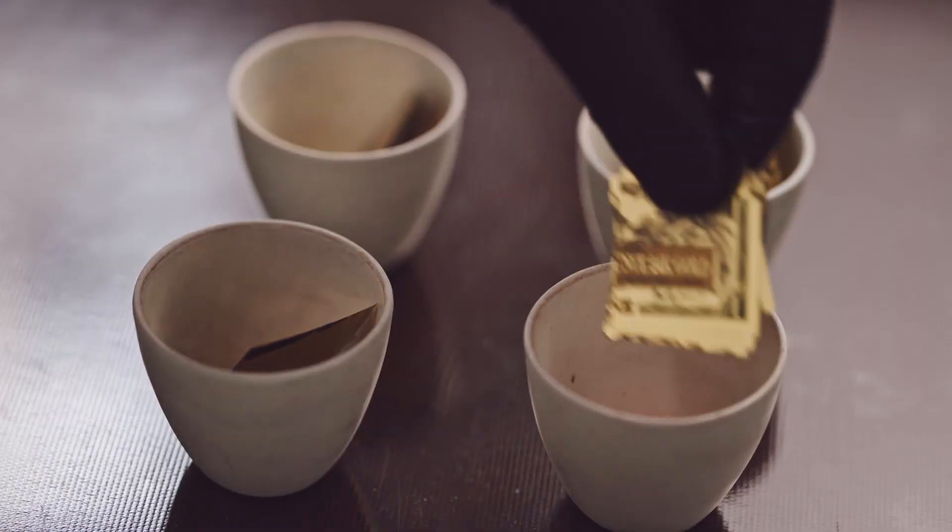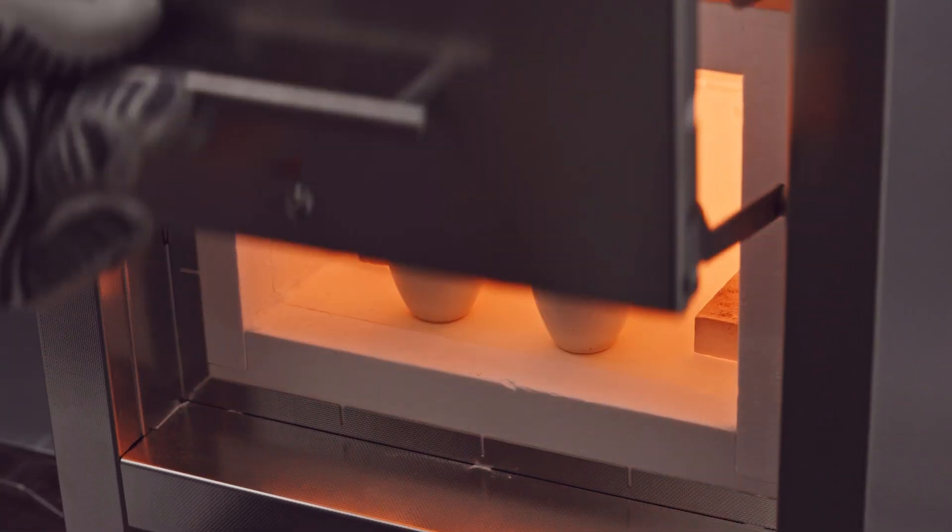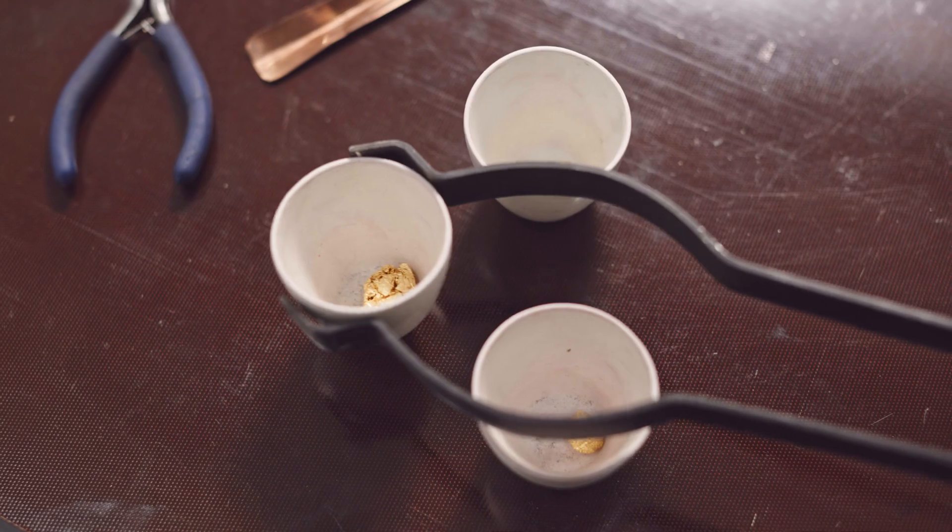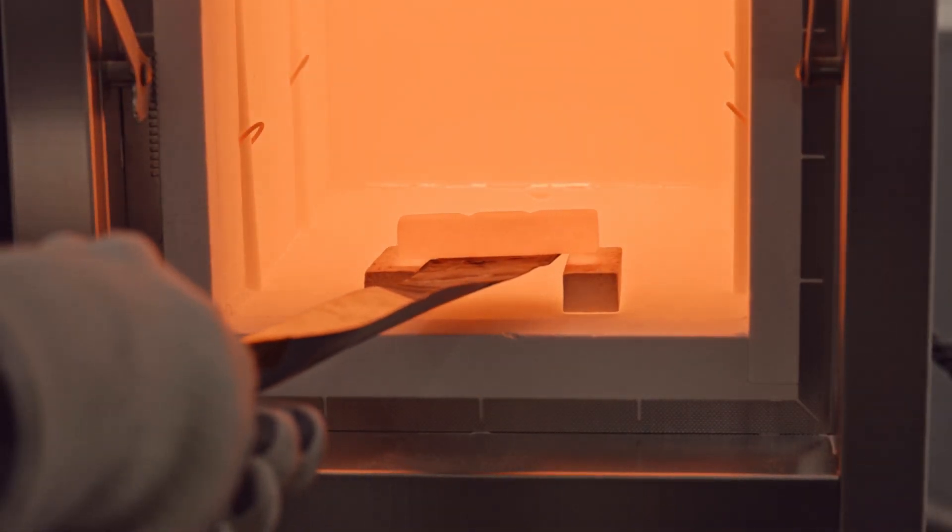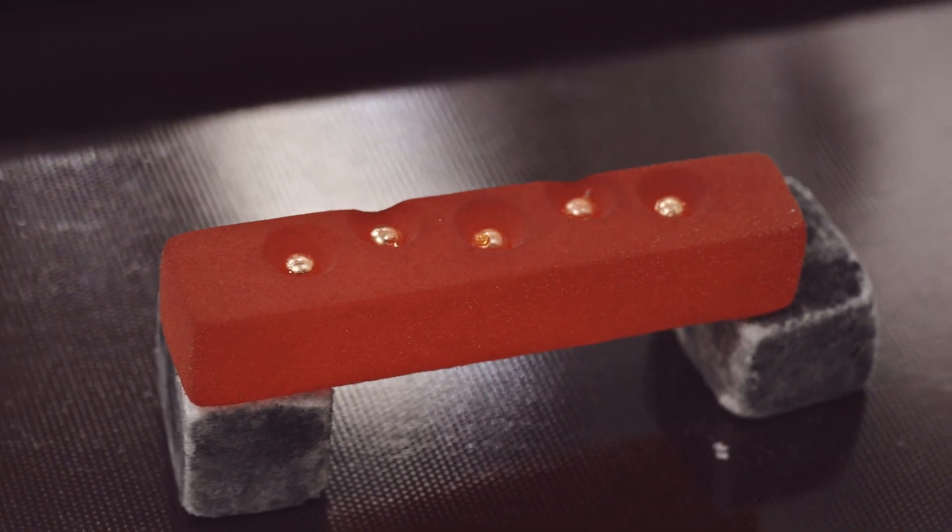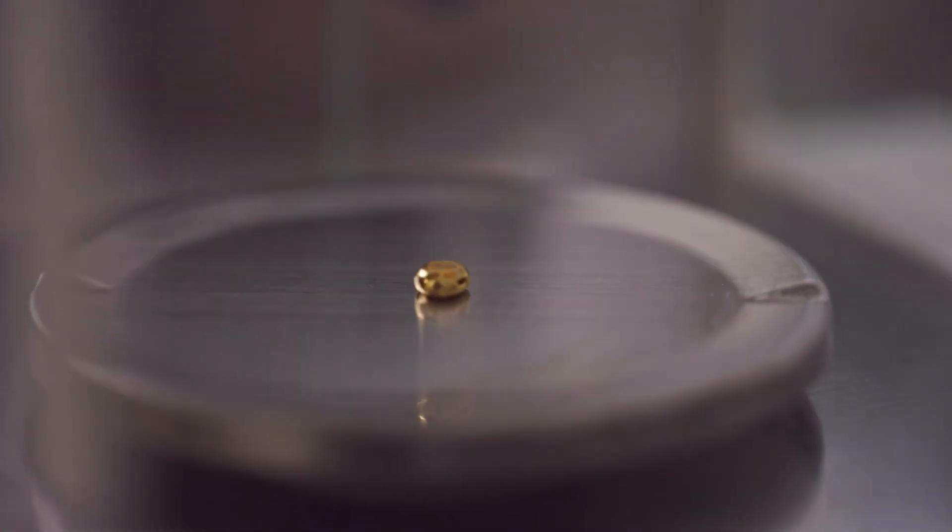Finally, a fire assay is used to test representative samples from the production run. In the assay, the polymer film is burned away, leaving only the gold behind. The resulting gold pellet is weighed using sensitive scales, confirming the precise quantity of gold.